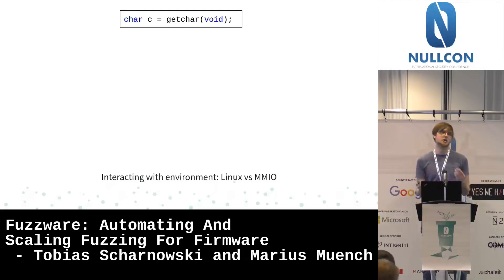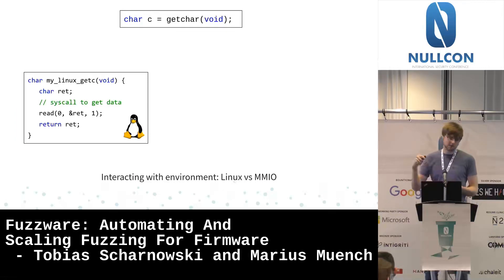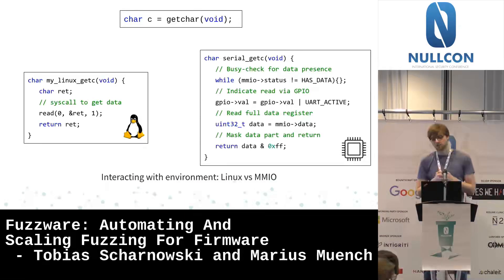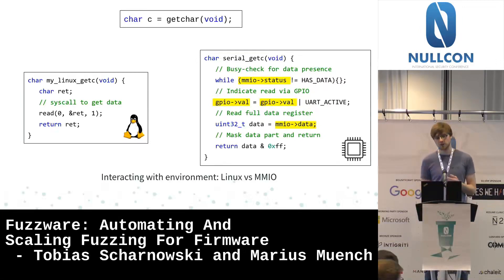From a normal fuzzing perspective, reading input looks like a simple get_char — just a read syscall on stdin. However, on the serial interface of an embedded controller, the same thing is much more complex: three different MMIO registers are involved in reading a single byte. It's much more involved and requires talking to the hardware, which we'll get into further.